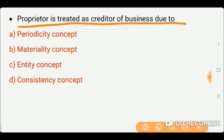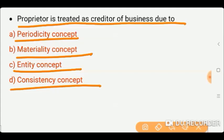Next question: The proprietor is treated as a creditor of the business due to which concept? Options: periodicity concept, materiality concept, entity concept, or consistency concept. The correct answer is option C — entity concept. The entity concept states that the business and its owner are different entities. The owner is shown as a creditor to the business. When the owner uses funds for personal use, we show it as drawings.